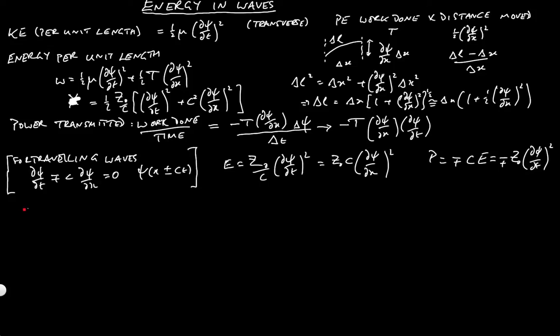Now let's think about what happens at a boundary between two strings. And this is just a little bit more subtle. We have to think very carefully about what's going on. So we'll put the boundary at x equals 0, and we'll have z1 on the left, i.e. x less than 0, and z2 on the right, i.e. x greater than 0.